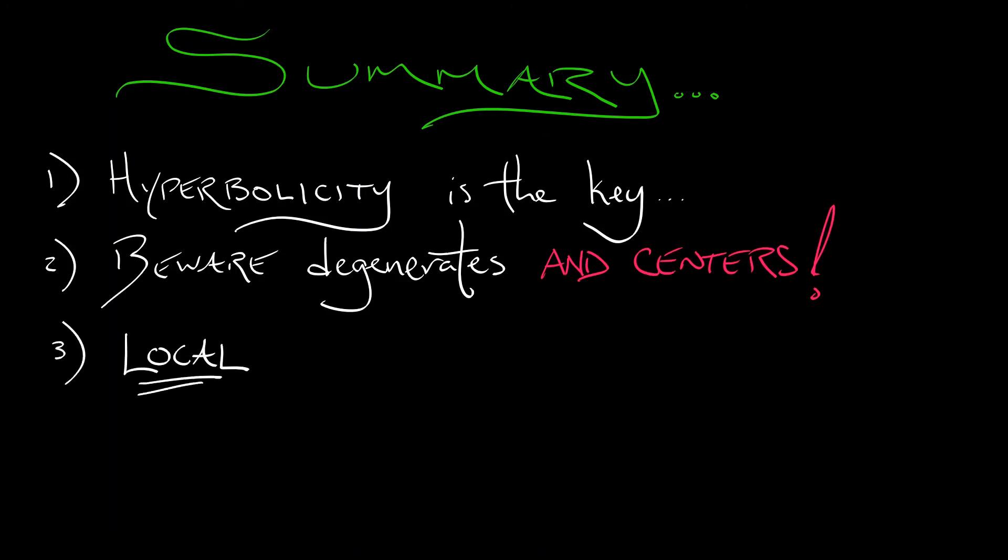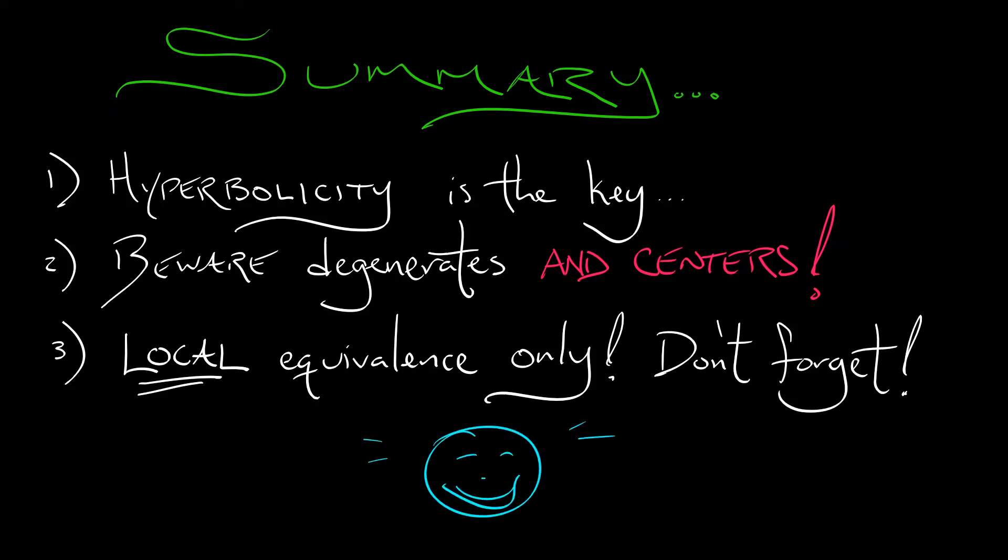The third moral is that Hartman-Grobman gives you local equivalents only. Don't forget that one, and you'll be fine. Hartman-Grobman is one of the key tools in nonlinear dynamical systems. Make sure you understand how to use it.